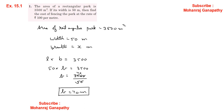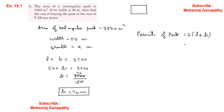Cost of fencing the park: the rate is 100 per meter. Cost of fencing covers the outer region, which is the perimeter. Perimeter of the park = 2 × (L + B) = 2 × (50 + 70) = 2 × 120 = 240 meters.